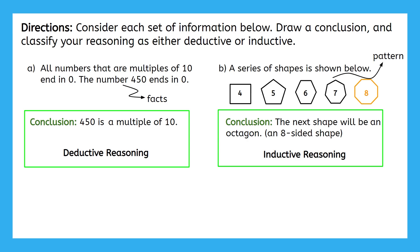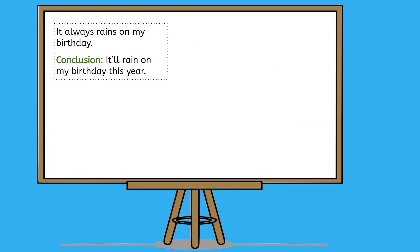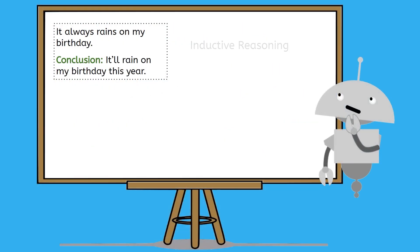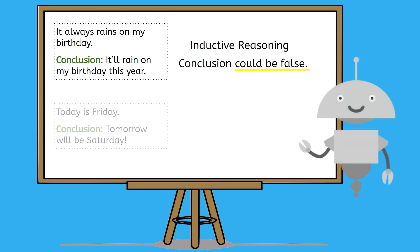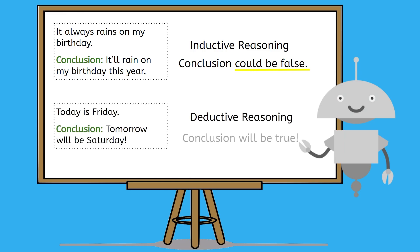We can never be 100% sure that our conclusions from inductive reasoning will be true. Because inductive reasoning just follows patterns but can never guarantee that our conclusion will be correct, we'll mostly be using deductive reasoning throughout this course. Now you can determine a conclusion based on given information and classify your reasoning as deductive or inductive.